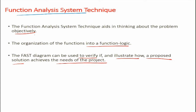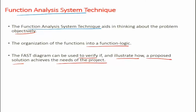FAST stands for Function Analysis System Technique. It aids in thinking about the problem objectively. The organization of functions into a functional logic — the functions are organized into a logic. We will be able to identify the functions of a product and the functions with the components of the product. You can see whether there is a redundancy or not; for instance, 'join parts' and 'fix parts' can be a similar kind of thing. We can see if functions are redundant or if there is a clear line between two functions doing separate jobs. The FAST diagram can be used to verify if and illustrate how a proposed solution achieves the need of a project.